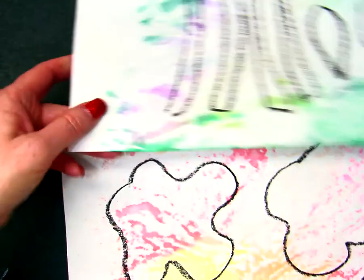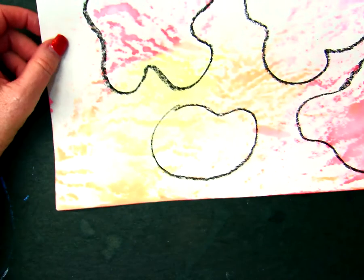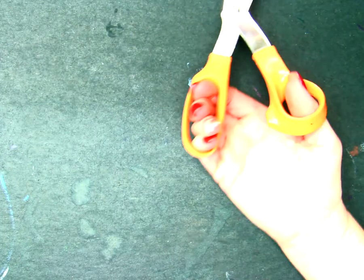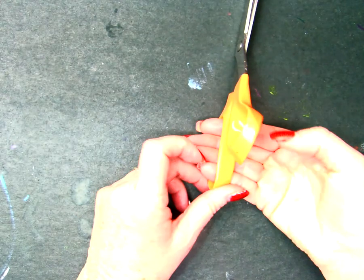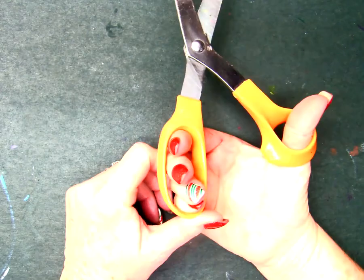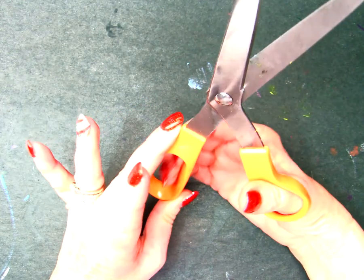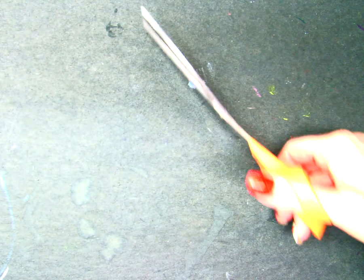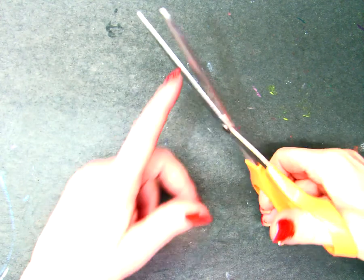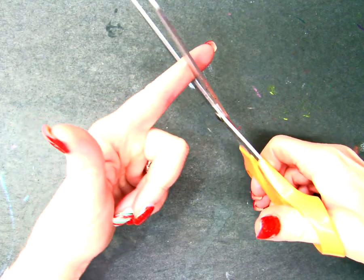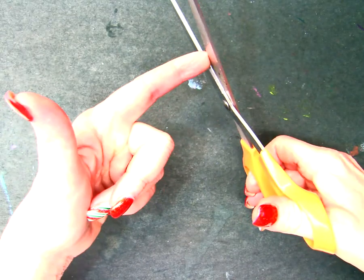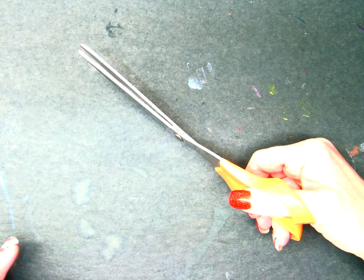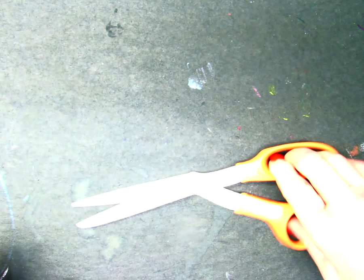I'm going to remind you guys once again that your thumb goes in the small circle, your fingers go in the top circle, and the thumb goes up when we are cutting. Try to use this part of your scissors as opposed to this part of your scissors. I will be right back. You start cutting.